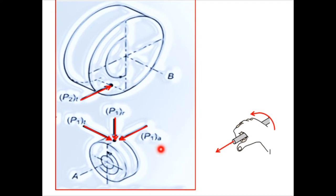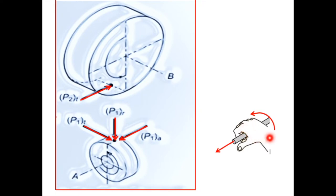Right-handed threads are used for the worm. Use the right-hand thumb rule to decide the direction of the axial component. For right-hand threads, use your right hand on the gear, and since the direction of rotation is anti-clockwise, curl your fingers anti-clockwise. The thumb then decides the direction of the axial component. Therefore, P1A is directed towards the left-hand side. In this way, we can decide the direction of the axial component using the thumb rule.